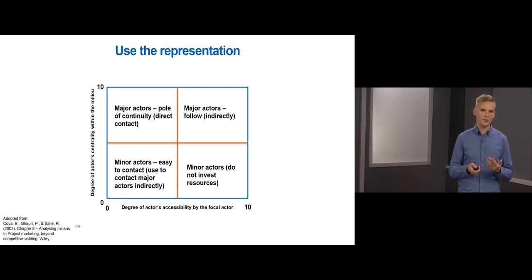At this point, two measures can be very useful to derive plans. The degree of centrality of actors within the milieu and the degree of accessibility to actors by the company. Using these two measures, a 2x2 matrix can be drawn that helps to define action plans. Actors who have high degree of centrality and low accessibility are allies and potential partners. These are the actors on whom to base the approach to anticipate the existence of projects in the given milieu. The target of the action plans here is to transform these into a pole of continuity.